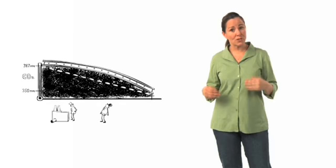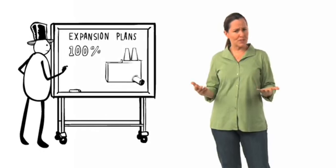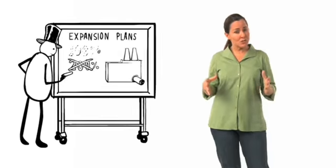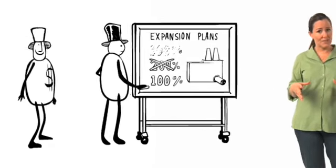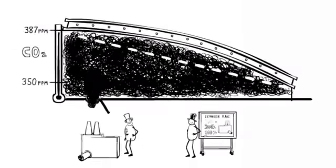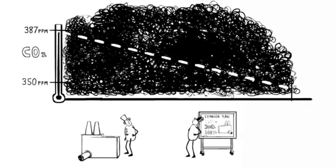Companies can even earn offsets for not doing anything at all. Like operators of a polluting factory can claim they were planning to expand 200%, but reduce the plans to expand only 100%. For that meaningless claim, they get offset permits. Permits that they can sell to someone else to make more pollution. That is so stupid.